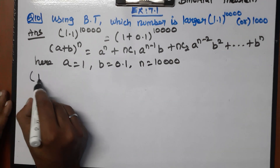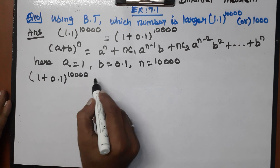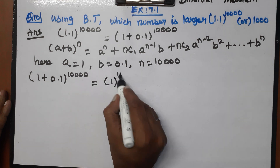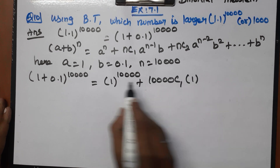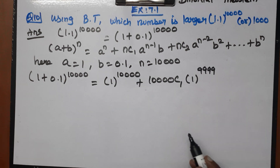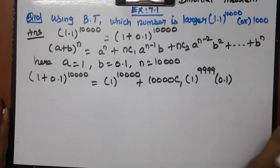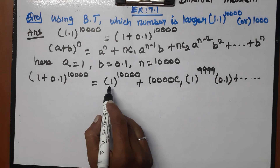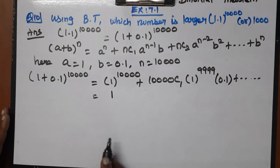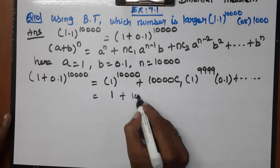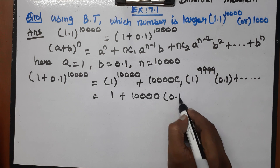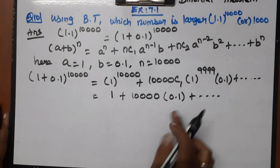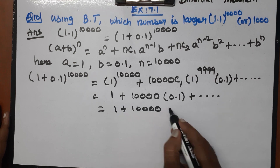Applying Binomial theorem: (1 + 0.1)^10,000 equals 1 power 10,000 plus 10,000C1 times 1 power 9,999 times 0.1, plus further terms. The first term is 1, and the second term is 10,000 times 0.1 which equals 1,000. Adding further positive terms gives a total greater than 1,000.